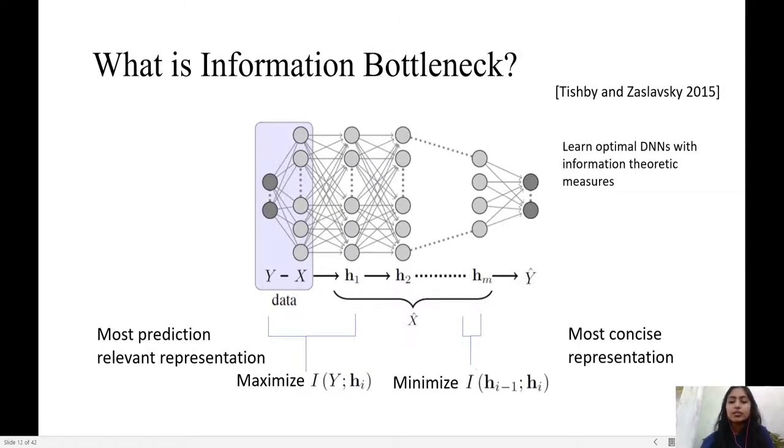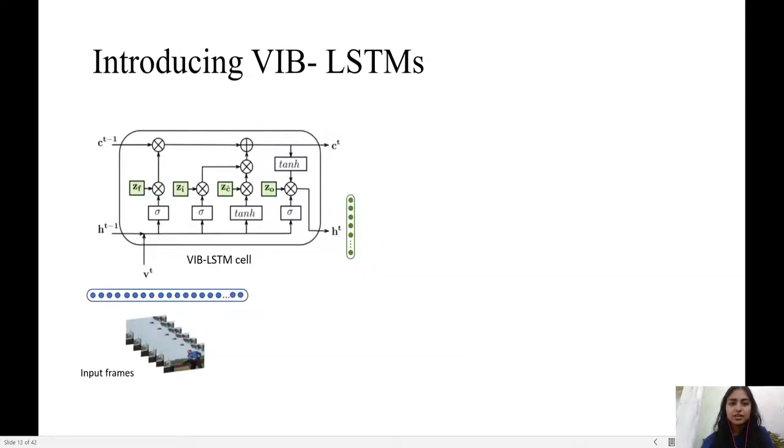At the same time, to get the most concise representation, one must minimize mutual information between consecutive hidden layer representations. We adapt this theory to LSTMs to get the most relevant hidden states required for prediction.